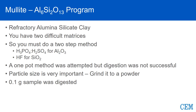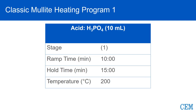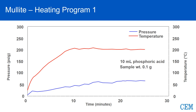For mullite, we used a tenth of a gram and added 10 mL of phosphoric acid, then ramped for 10 minutes with a 15-minute hold at 200°C — going after the aluminum portion. The temperature profile sits at 200°C and the pressure is fairly low.